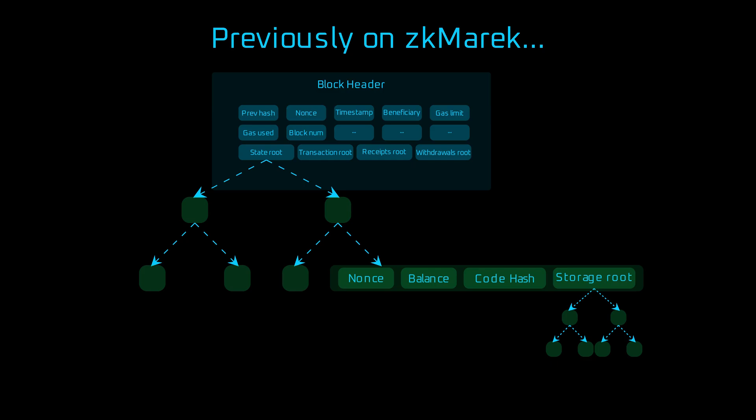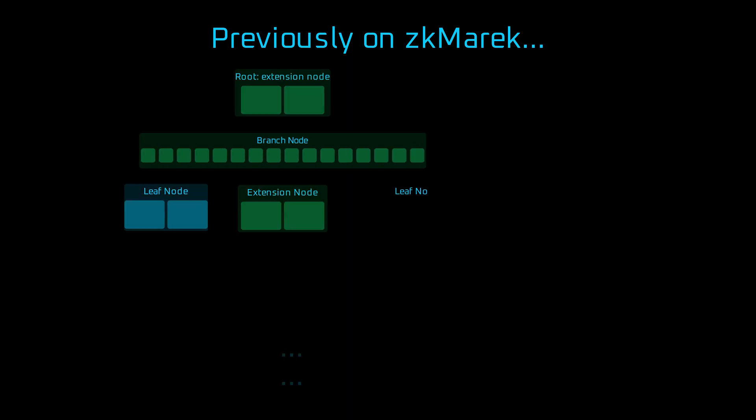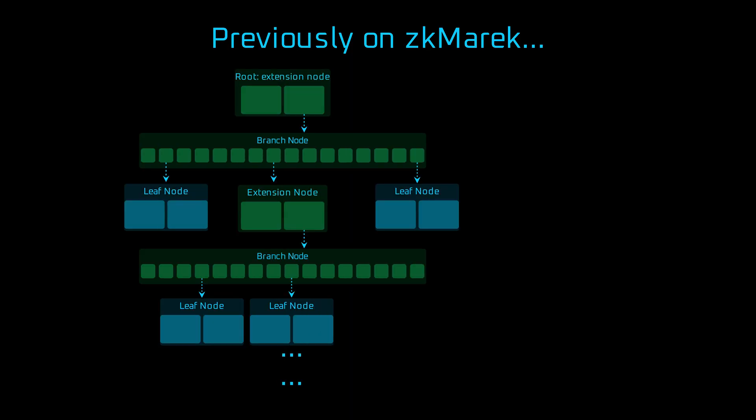Yep, a try inside a try, storing smart contract variables. Ethereum merkle-patricia-try uses extension nodes, branches, and leaves. On average, the state merkle-patricia-try is nine levels deep.